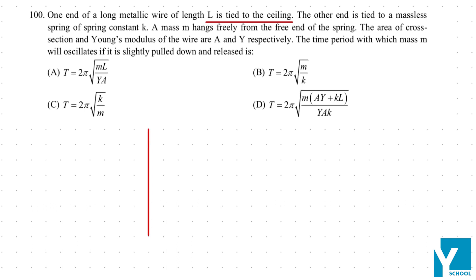The other end is tied to a massless spring. We put a massless spring below which we kept a mass M. Now this mass hangs freely, and the area of cross section and Young's modulus is given. The time period with which the mass will oscillate if it is slightly pulled down and released is what we need to find.